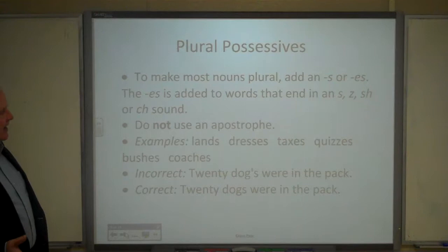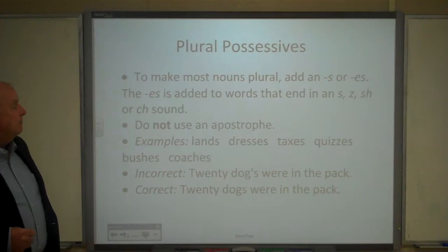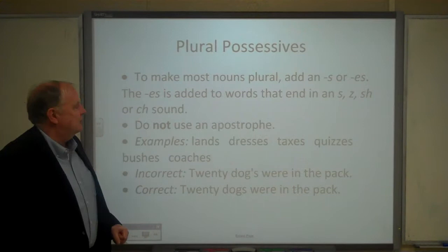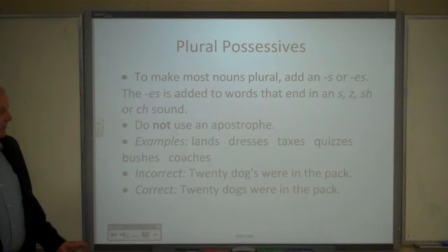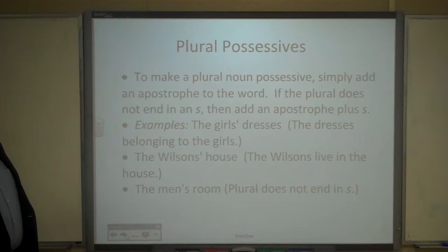To make most nouns plural, you add an S, or sometimes an E-S to words that end in an S sound, a Z sound, an SH or CH sound. But you don't use an apostrophe if you're just making them plural. So: lands, just add S. Dresses, add E-S. Taxes, quizzes, wishes, coaches — all add E-S. So 'twenty dogs were in the park' — no apostrophe, it's just a plural.